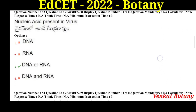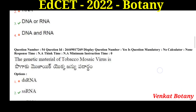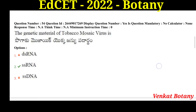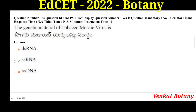Nucleic acid present in virus — viruses can contain either RNA or DNA. The genetic material of tobacco mosaic virus is single-stranded RNA.